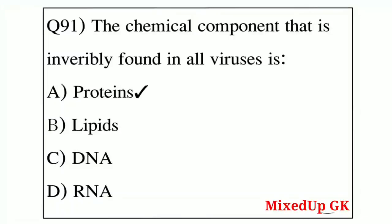Question number 91: the chemical component invariably found in all viruses is — Option A: protein, Option B: lipids, Option C: DNA, Option D: RNA. The correct answer is Option A — protein.